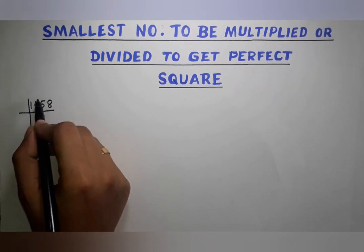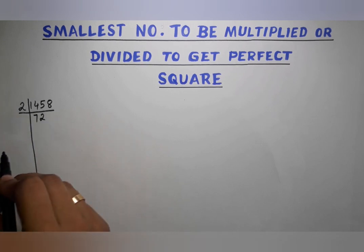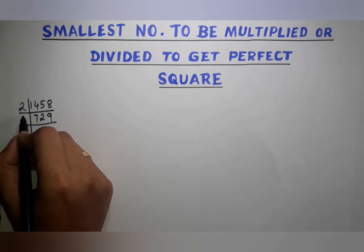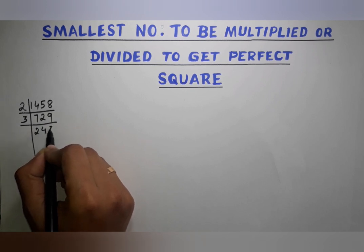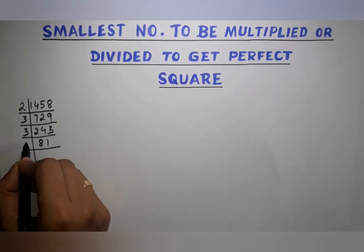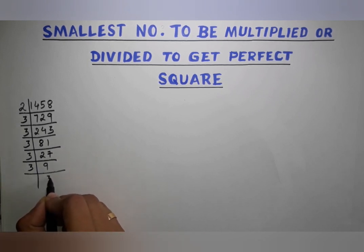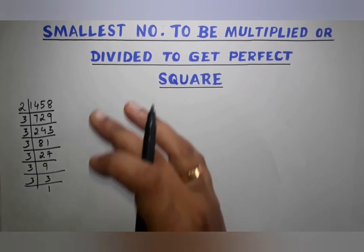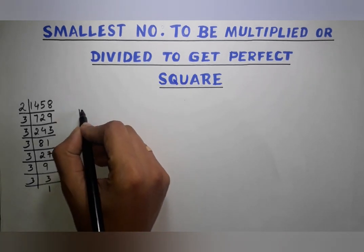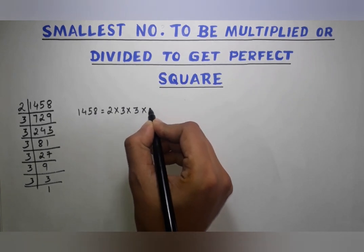Since 1458 is an even number, I'll start with 2. Then 1458 divided by 2 gives 729, which is odd, so I move to 3. Dividing by 3 repeatedly: 729 ÷ 3 = 243, 243 ÷ 3 = 81, 81 ÷ 3 = 27, 27 ÷ 3 = 9, 9 ÷ 3 = 3, 3 ÷ 3 = 1. I have shown the full prime factorization process in my previous video.